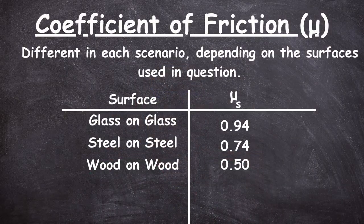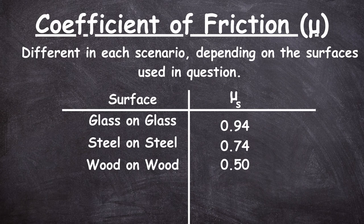This can be explained by the following equation: the maximum amount of static friction equals the coefficient of static friction multiplied by the normal force. This coefficient differs depending on the surface and the materials in contact. For example, glass on glass has a coefficient of 0.94, steel on steel is 0.74, and wood on wood is 0.25 to 0.5. The smoother the surface, the lower the coefficient of friction, whereas the rougher the surface, the higher the coefficient.